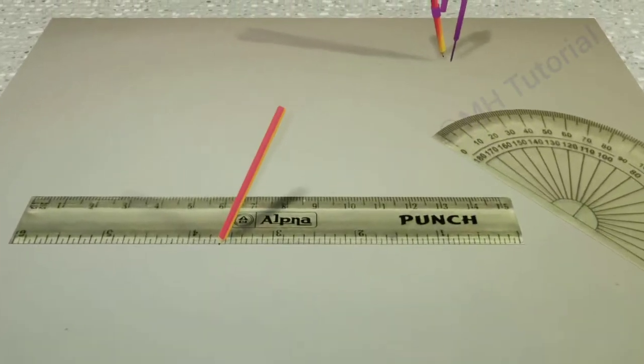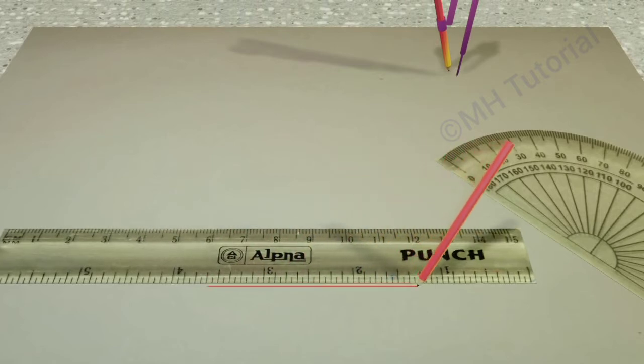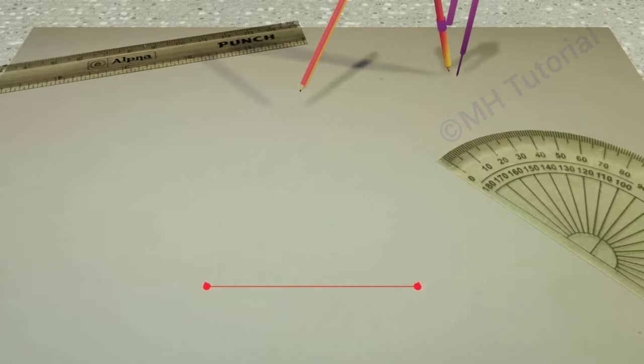Let's start building the angle by drawing a straight line on the middle of the sheet. The straight line segment is named OA.